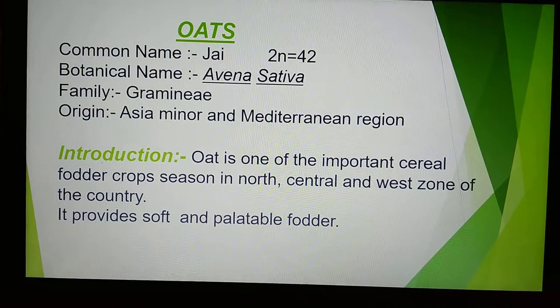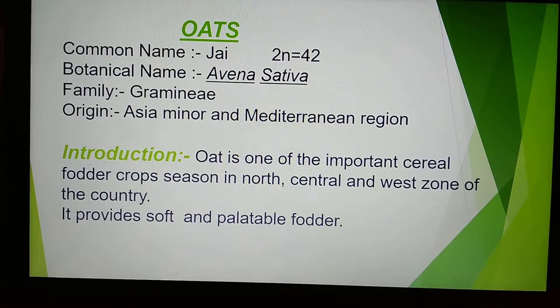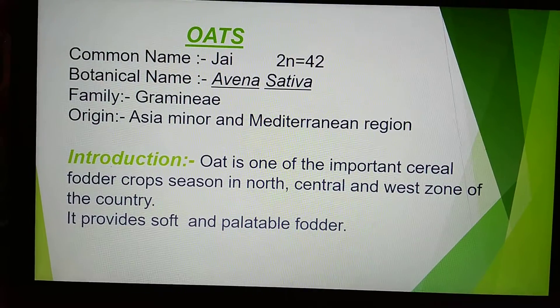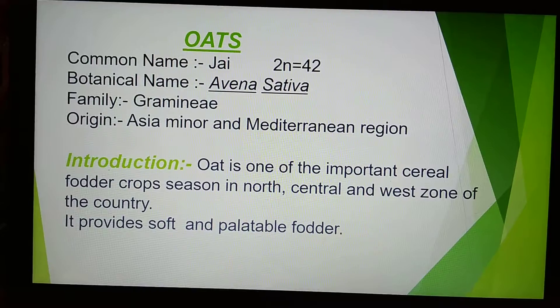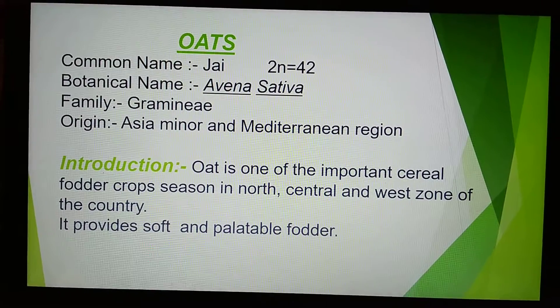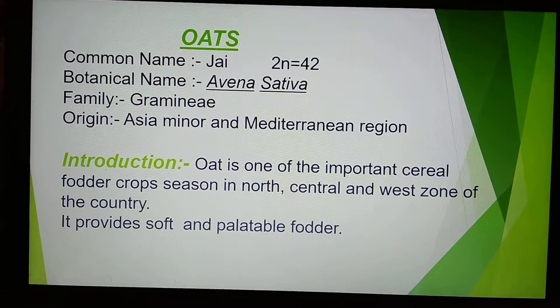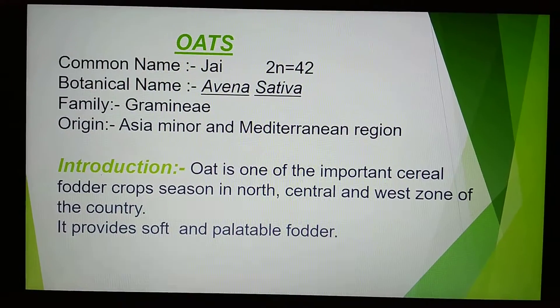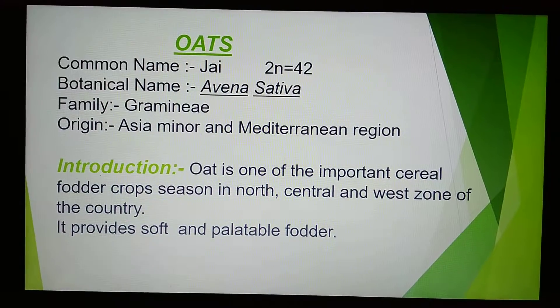Oat, common name Jai, chromosome number 42, botanical name Avena sativa, family Gramineae, origin Asia Minor and Mediterranean region.